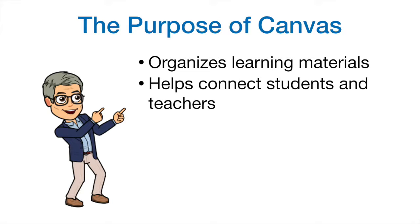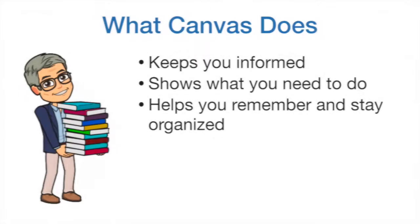Canvas organizes all the stuff that happens in your class. Canvas shows you what's going on in your classroom — you will see what you're doing now, what's ahead, and what you've already done. Canvas helps you know what you need to do. Your teacher will probably give you assignments in Canvas and can show you what is expected for each assignment. When you submit your work, your teacher can let you know specifically how you did using comments and notes, so you can know how you rocked it and where you need to improve. Canvas also helps you remember and stay organized. When your teacher gives you assignments, that work will appear on a to-do list so you don't forget.